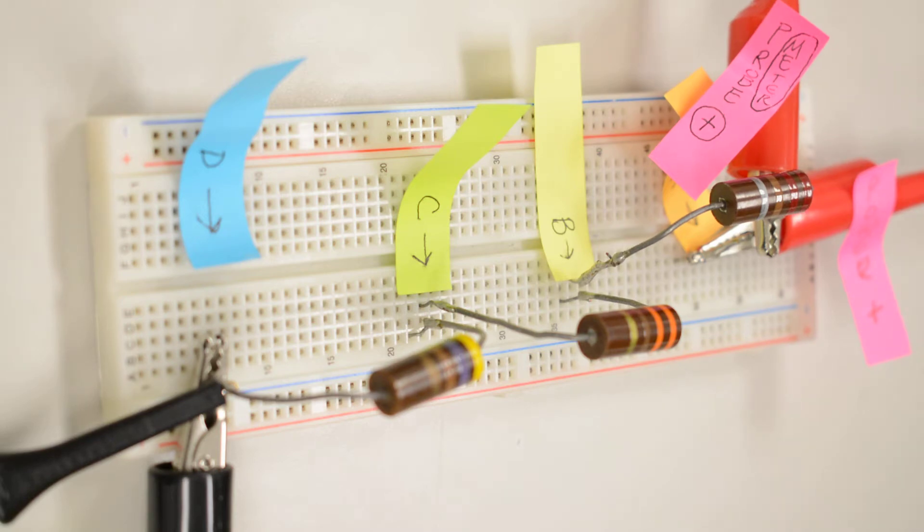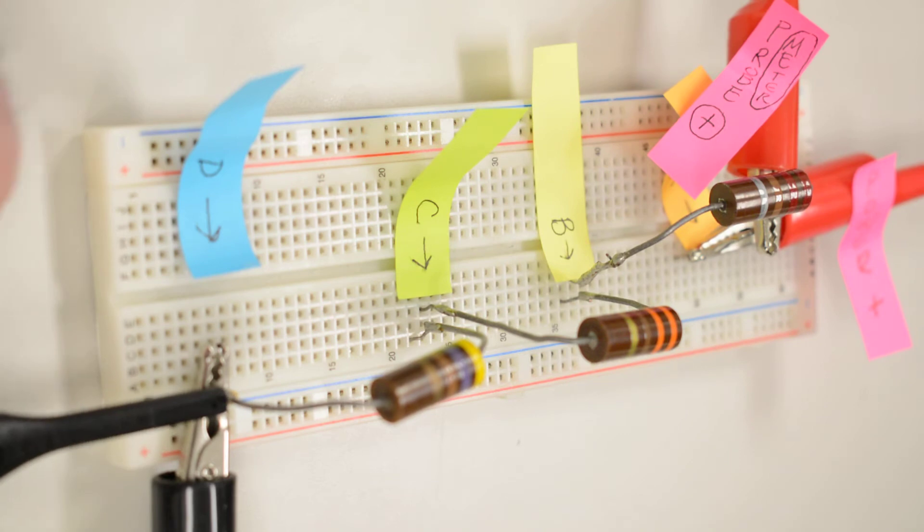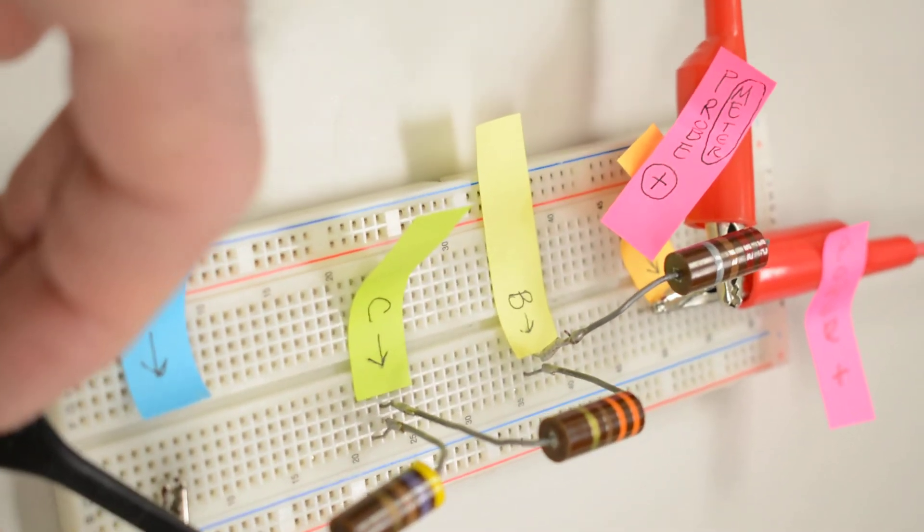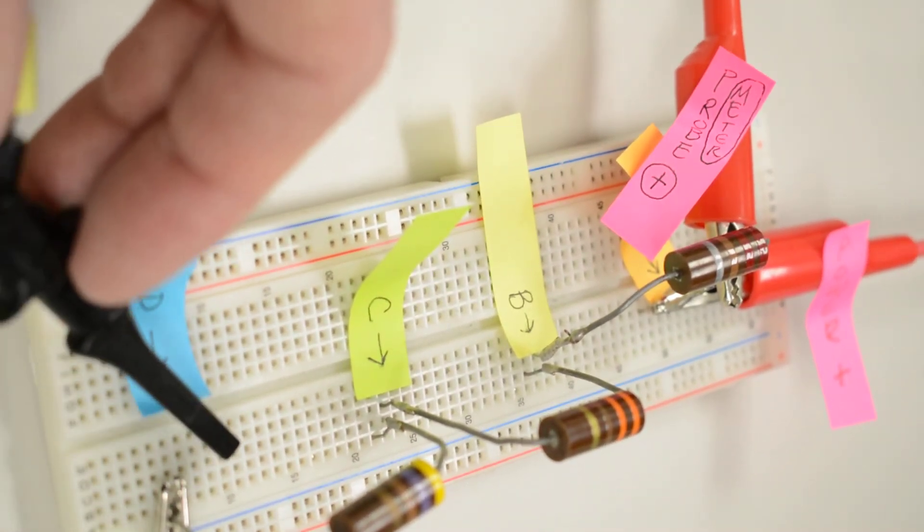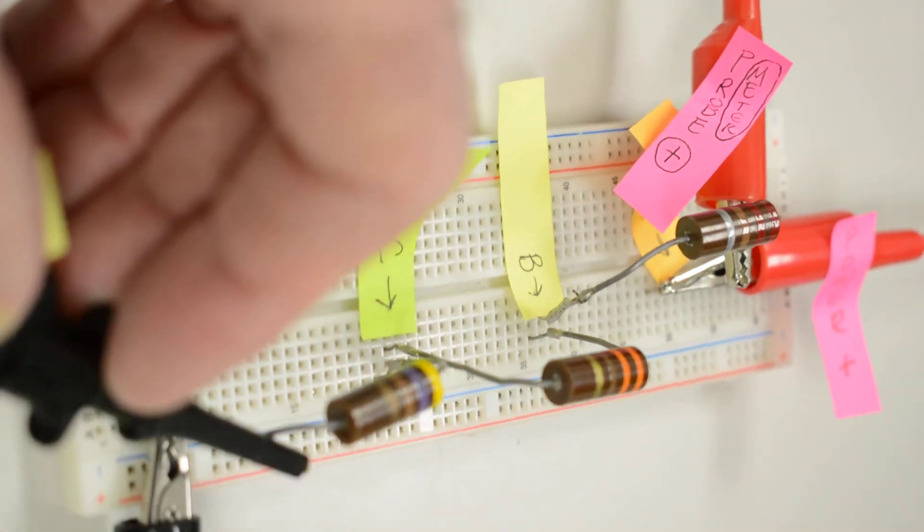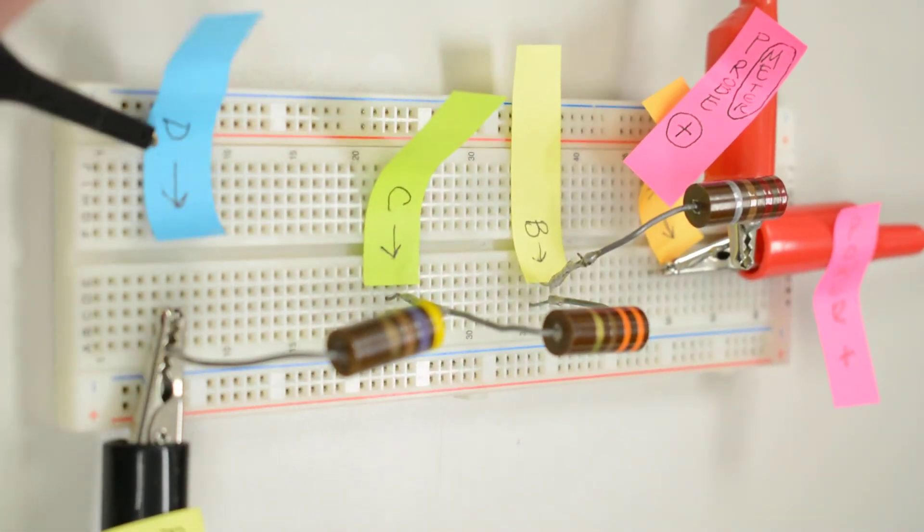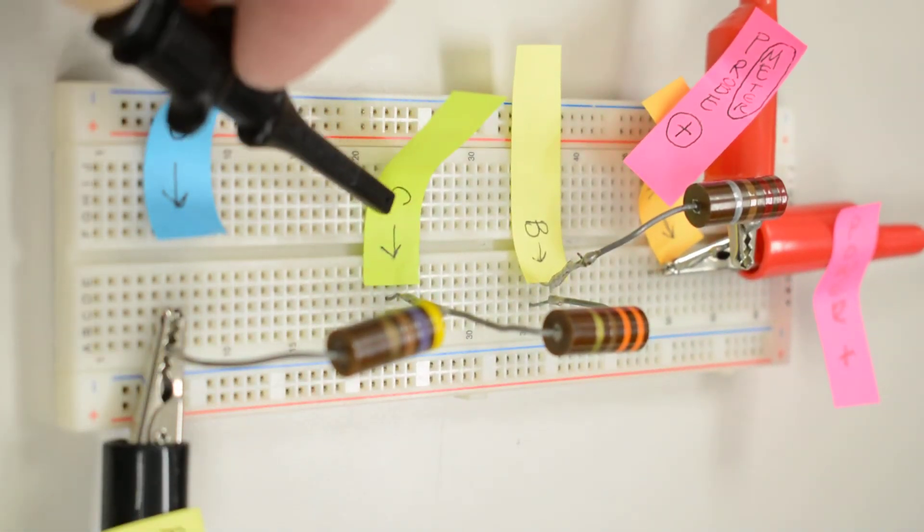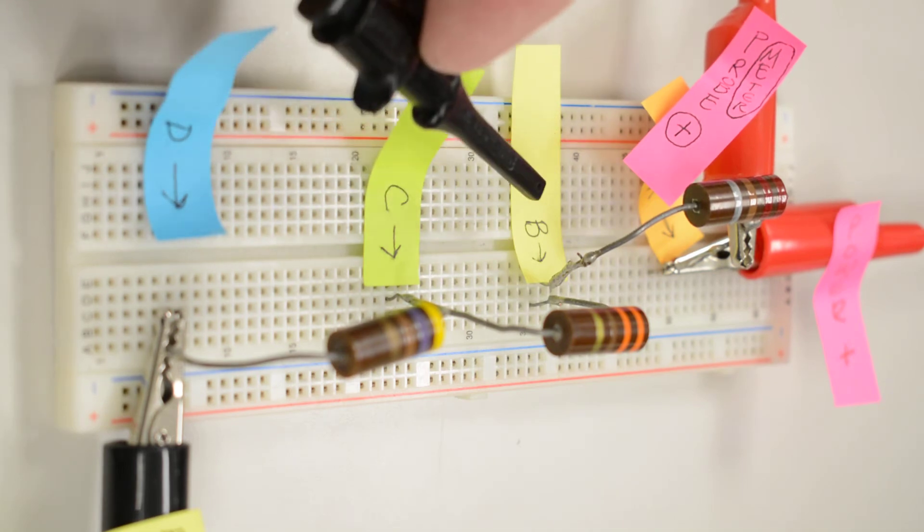The only thing that will move is going to be my reference ground, and these are my two meter leads. I've got the special ground, and this is at point D, and then I'll move my ground to point C, and I'll move my ground to point B.